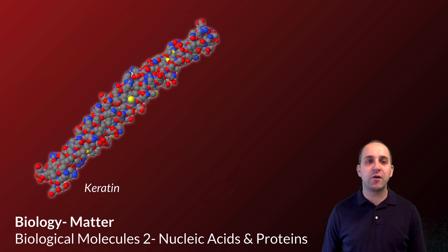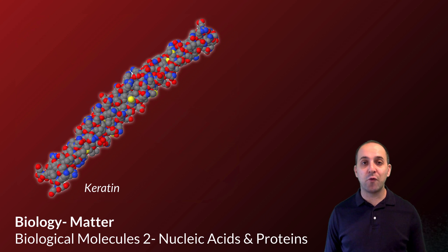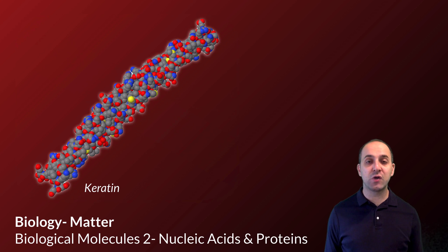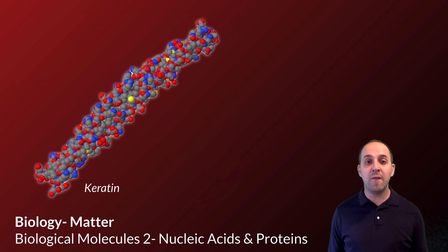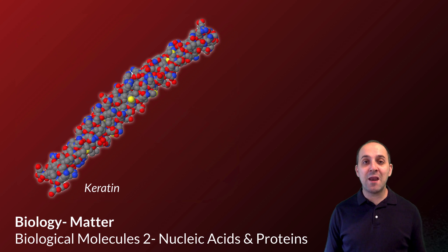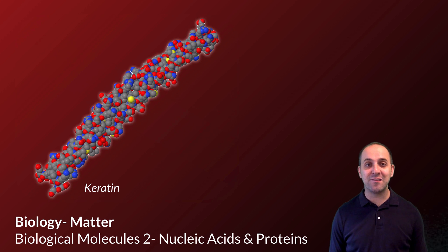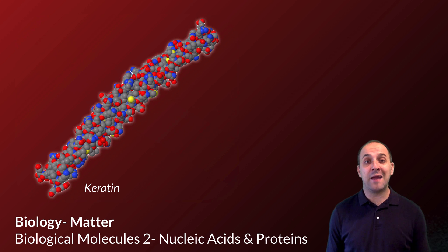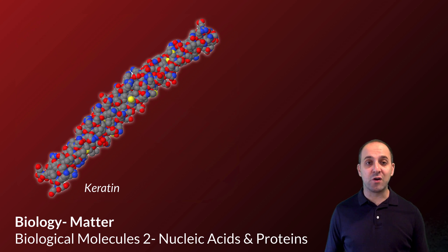This is a model of the keratin protein. You have it all over your body — it's also the main ingredient in your fingernails. And for whatever reason, people with hypertrichosis produce much more of this in much more places on their body than people normally do. So with that in mind, let's talk about proteins and nucleic acids so that we can start to understand how they result in things like our hair and our nails and even conditions like hypertrichosis.